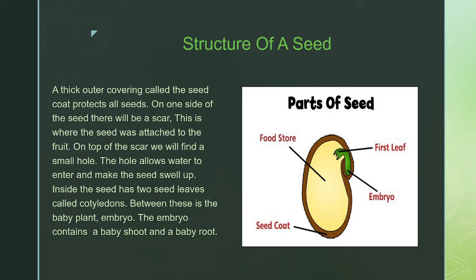Inside the seed has two seed leaves called cotyledons. Between these is the baby plant embryo. The embryo contains a baby shoot and a baby root.